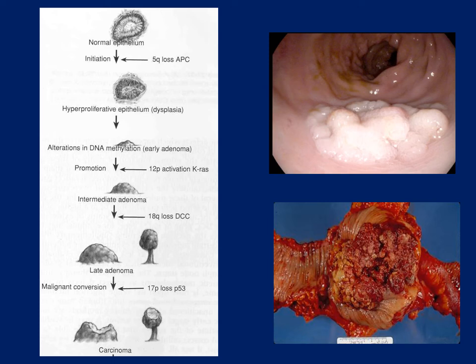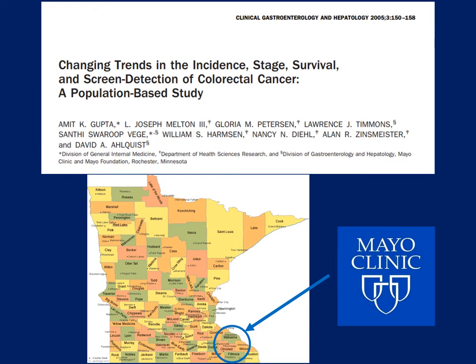Most colorectal cancers progress through the adenoma-to-carcinoma sequence via several genetic modifications — from normal colonocyte epithelium gradually proliferating through genetic changes to become an adenomatous polyp, and from there to cancer. This sequence typically occurs between 8 and 12 years in most patients, which gives us a tremendous opportunity to screen patients and detect lesions at an earlier time when they are still treatable.